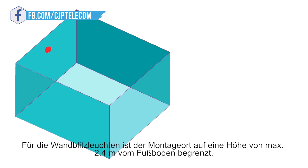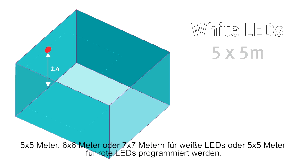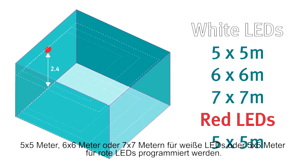For the wall beacons, the coverage volumes are based on a maximum height of 2.4 meters from floor level, so again subject to your control panel, you can set the coverage to 5x5, 6x6 or 7x7 meters for white LEDs and 5x5 meters for red LEDs.